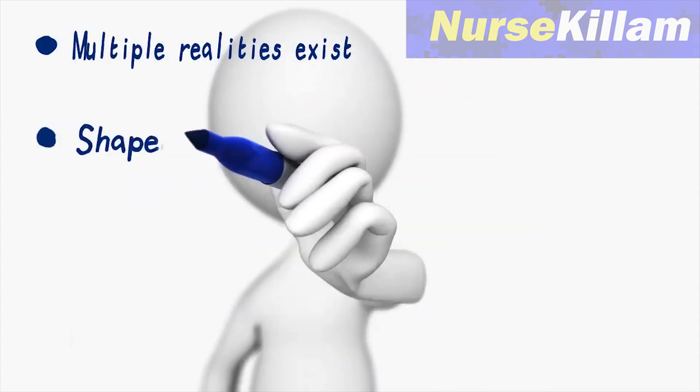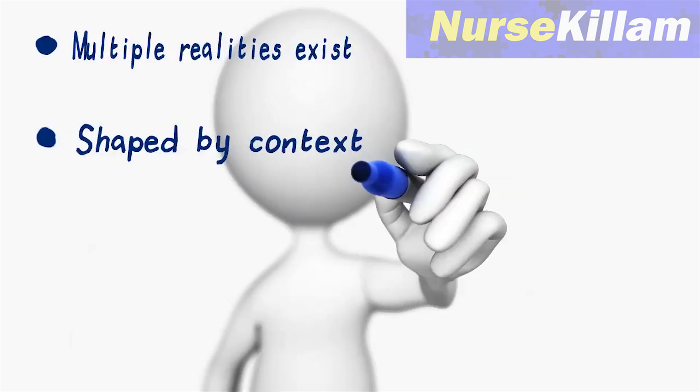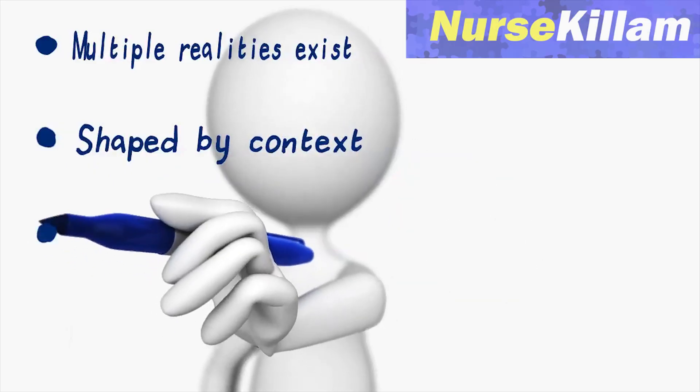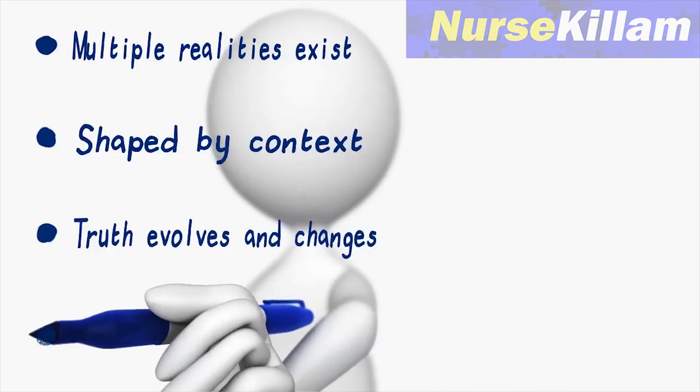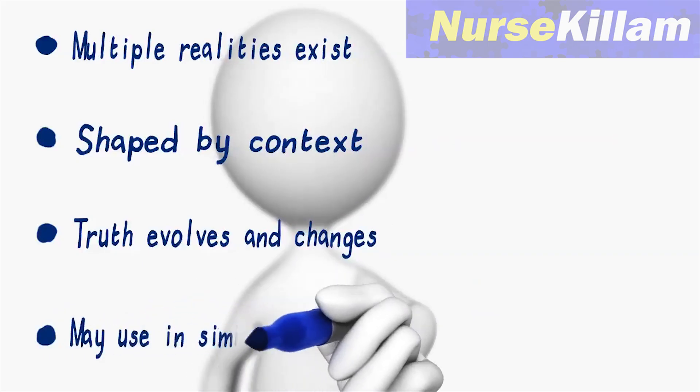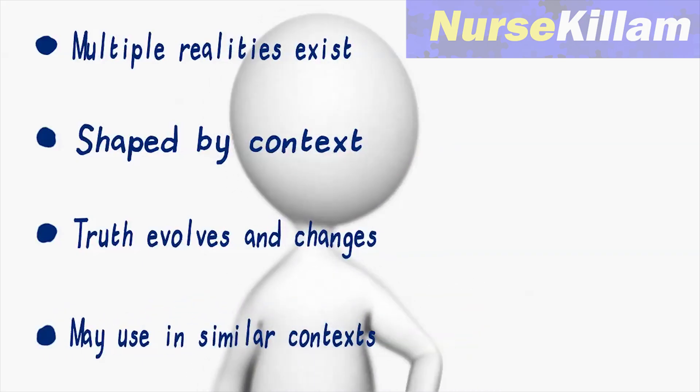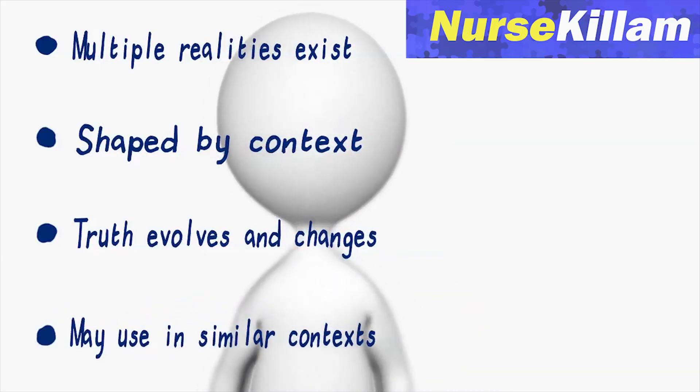What is real depends on the meaning you attach to truth. Truth does not exist without meaning. Since reality is created by how we see things, it evolves and changes depending on your experiences. If reality is context-bound, it cannot be generalized. It can only be transferred to other similar contexts.